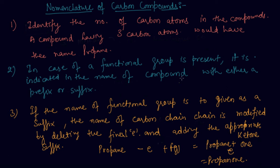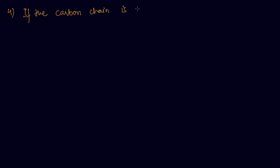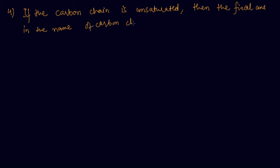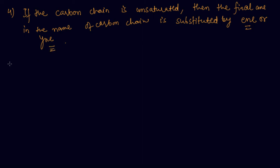The fourth point is: if the carbon chain is unsaturated — meaning it has a double or triple bond — then the final 'e' in the name of the carbon chain is substituted. If it is a double bond, it becomes '-ene', and if it is a triple bond, it becomes '-yne'.